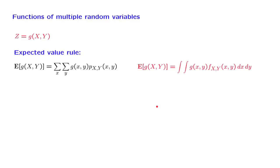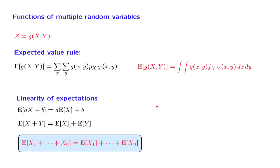And using the expected value rule, we can establish once more the usual linearity properties of expectations. So absolutely no surprises here. The derivations are either completely straightforward, or they follow exactly the same line of argument as in the discrete case, with just minor changes in notation.